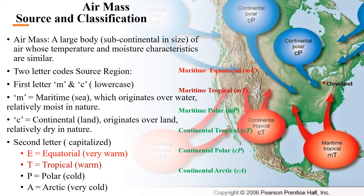Air masses are grouped into five general categories according to their source region. Air masses that originate in the polar latitudes are designated by the capital letter P for polar. Those that form in the warm tropical region are designated by the capital letter T. Those forming over the equator are designated E.